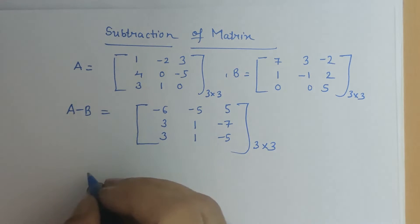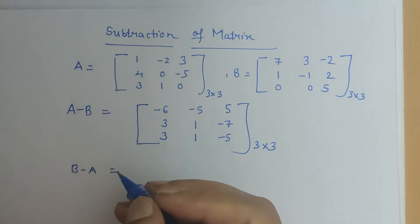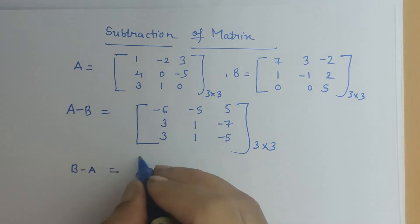Now if you see B minus A that result will be different which shows us subtraction of matrix is not commutative.